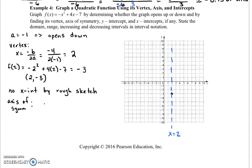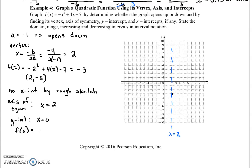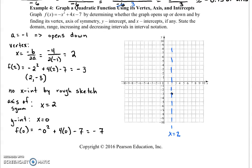And the last thing to do is find our y-intercept. Our y-intercept means we plug 0 in for x. So we get negative 0 squared plus 4 times 0 minus 7 is negative 7. So our y-intercept is at negative 7, and by symmetry, we also have a point at 4, negative 7.